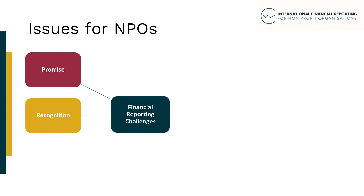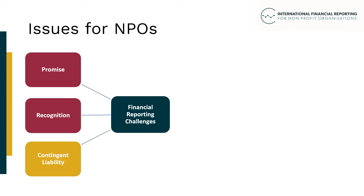Where an NPO has multiple grants, consideration should be given as to where a portfolio approach to such grants may be possible. Where the grant is paid in advance and there are conditions that the grant recipient needs to satisfy but these are not satisfied on the reporting date, the awarding body may have to show a prepayment. When an NPO has made a promise but cannot measure its value at the financial reporting date, it is most likely that there will be a contingent liability. If such a promise can be measured, then it would be a provision.